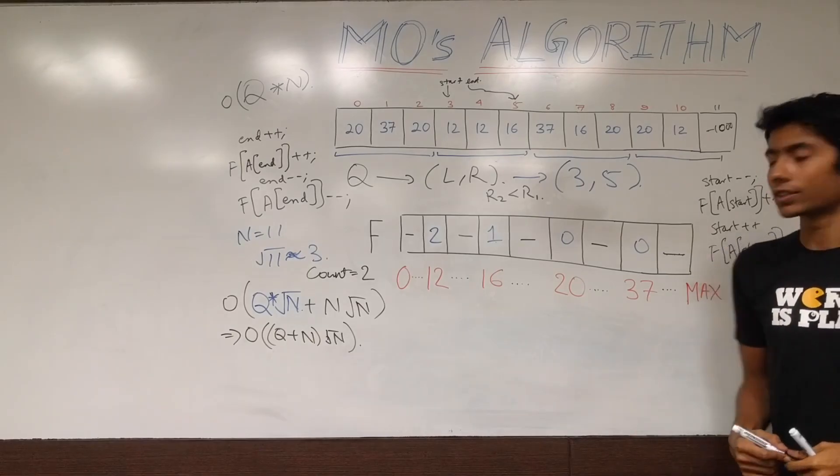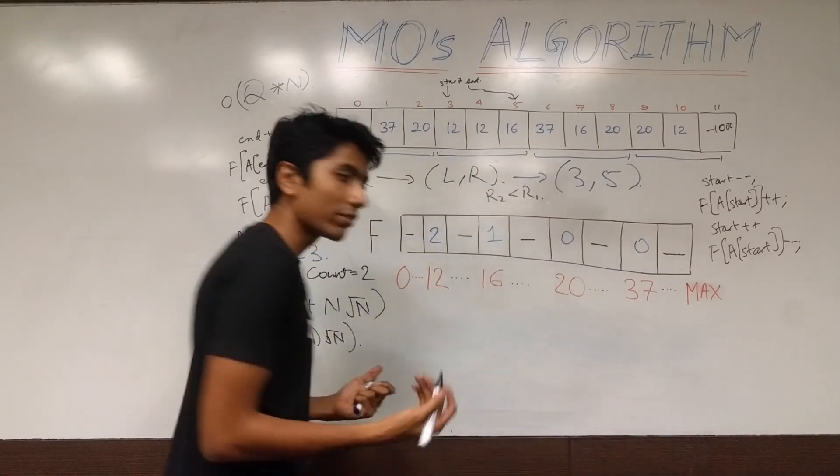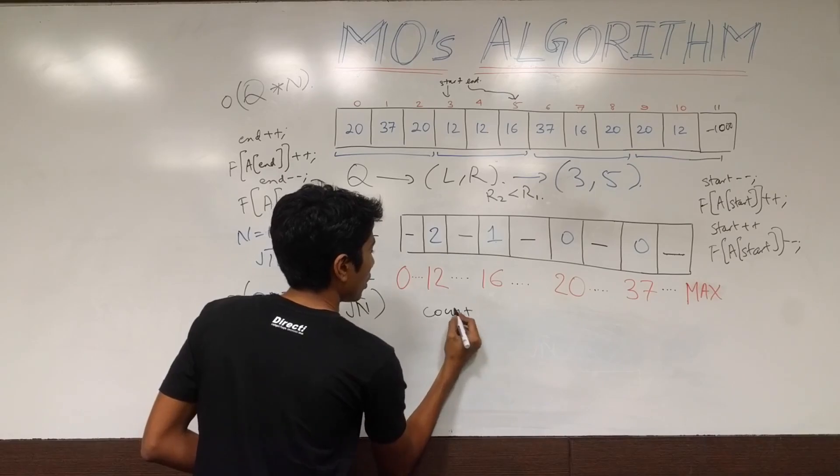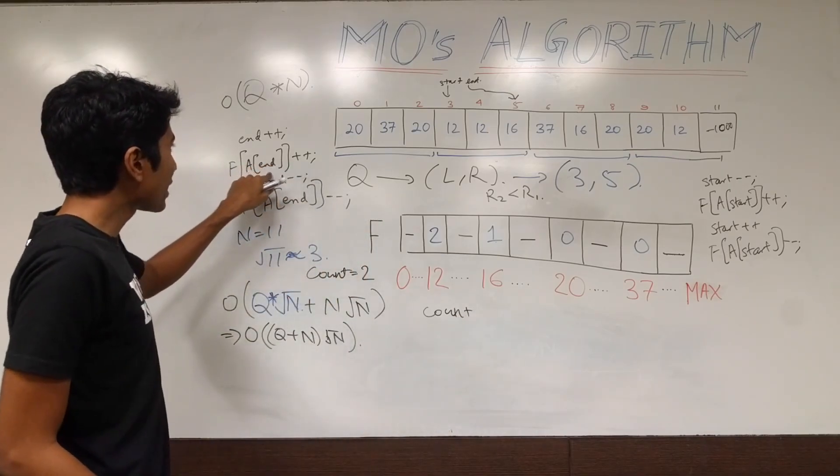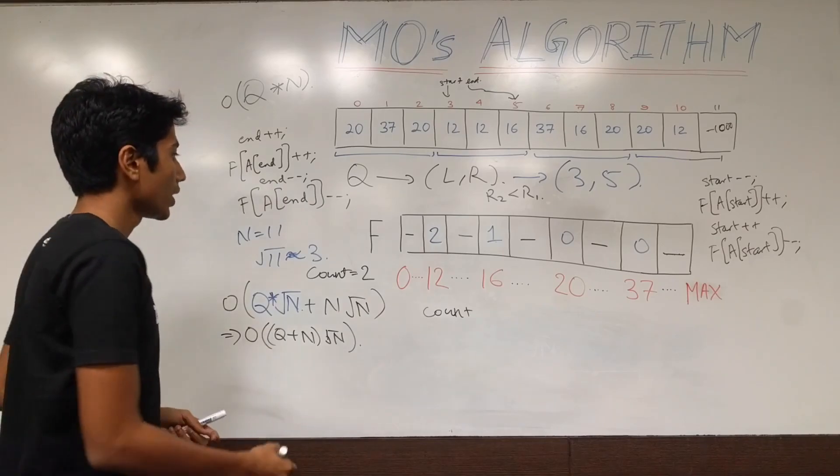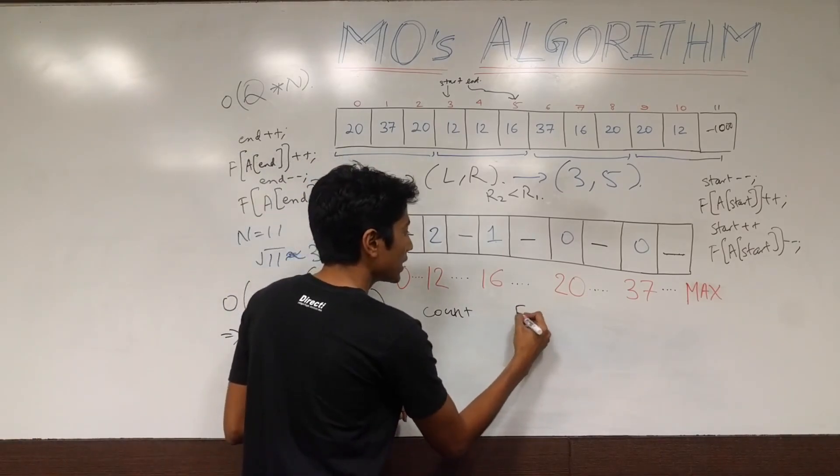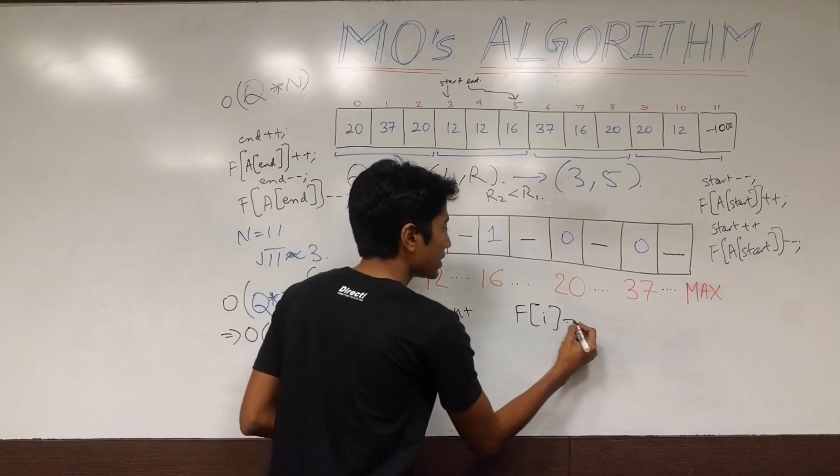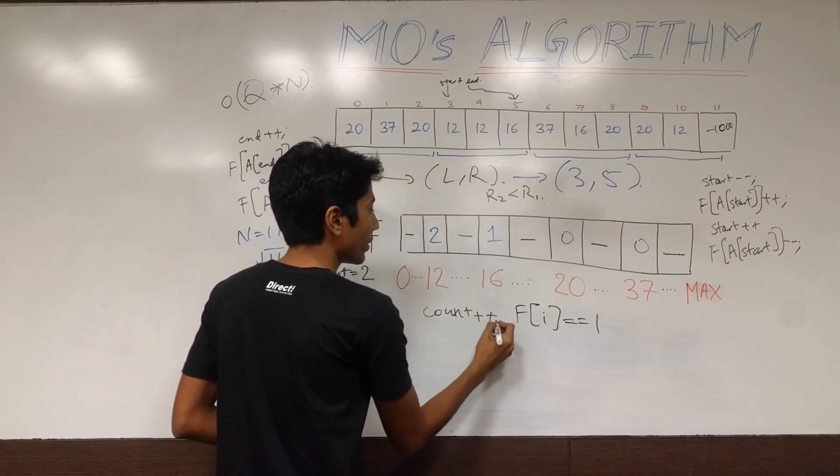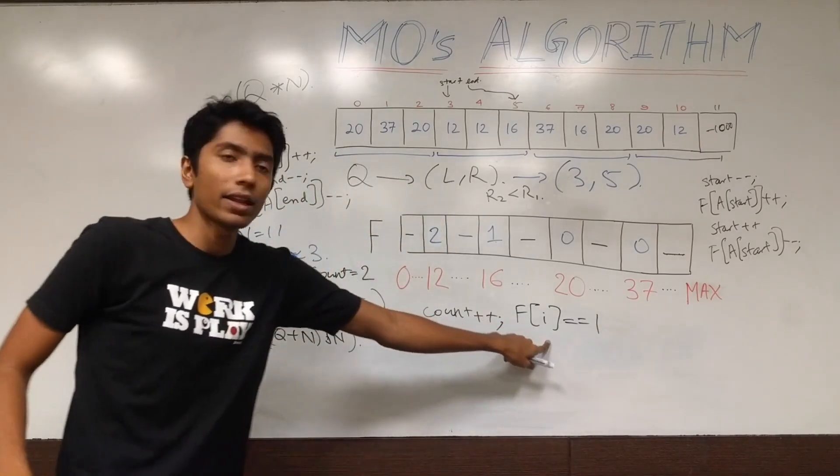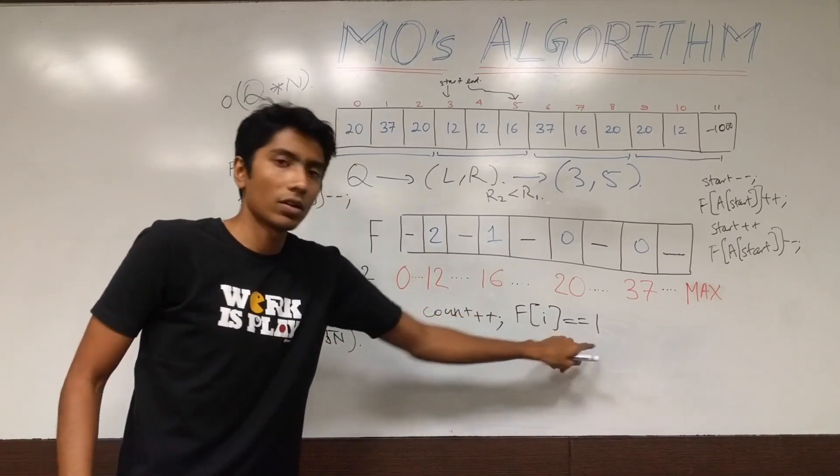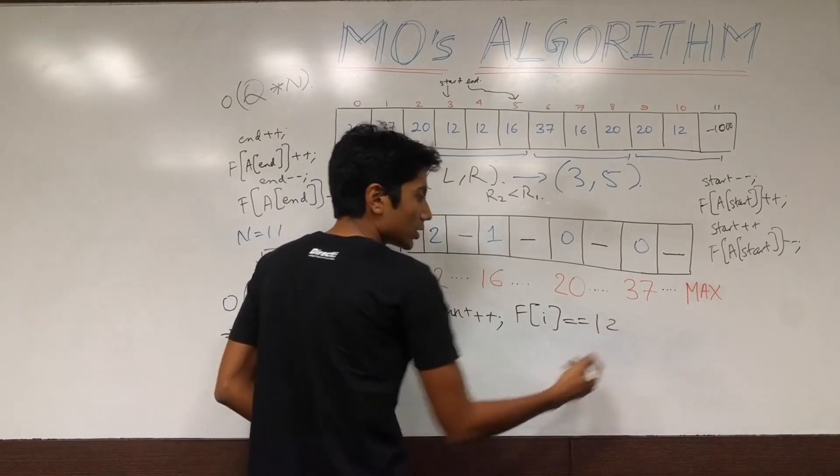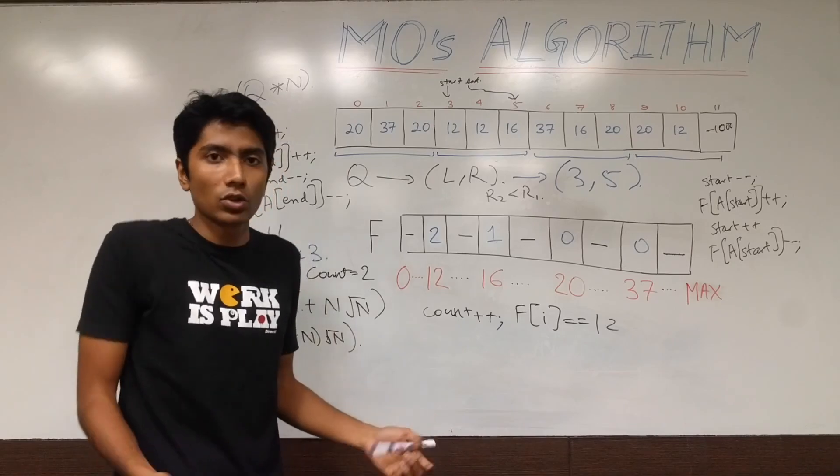And how do you output answers? Well, you have that variable count. So, this is how count behaves. Whenever you're incrementing the frequency of an element, if that frequency is being incremented and it's equal to 1, then you need to increment count. Because you just added an element to your set. Count became 1. If it becomes 2, 3, 50,000 doesn't really matter. You've already added that element to your set. So, that's okay.